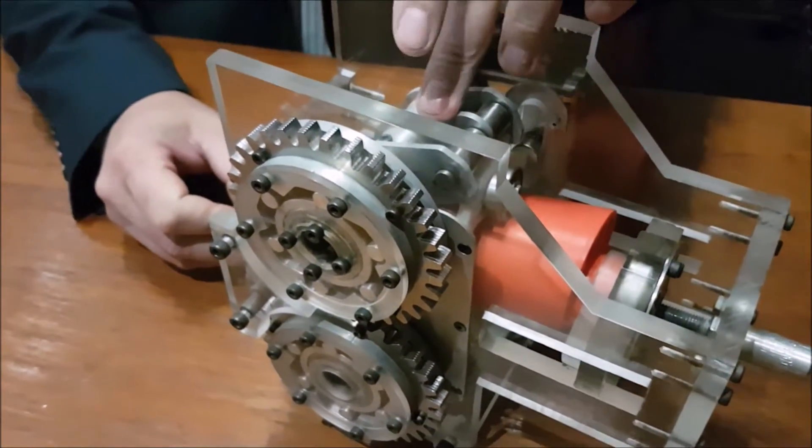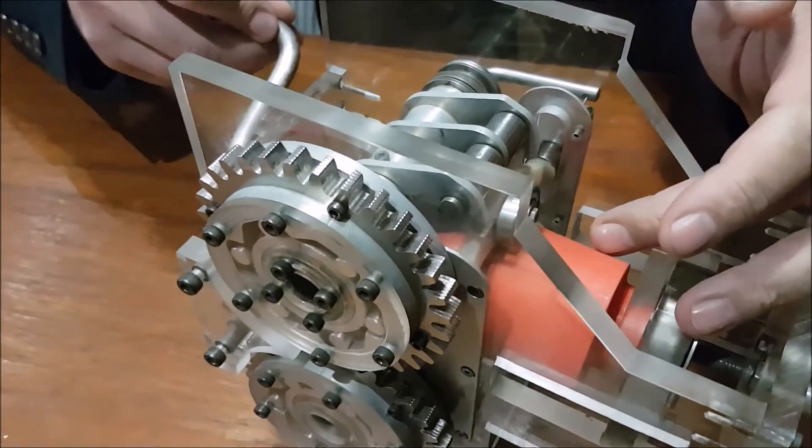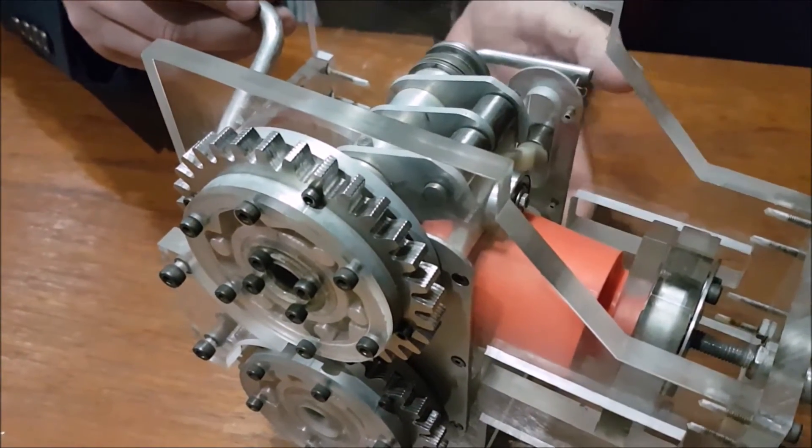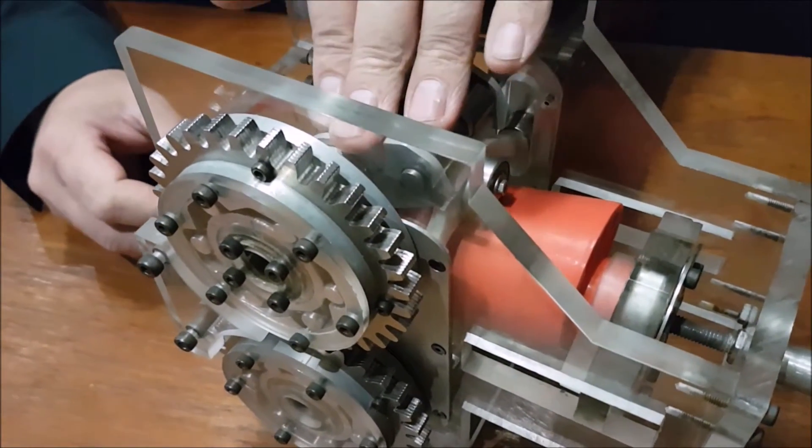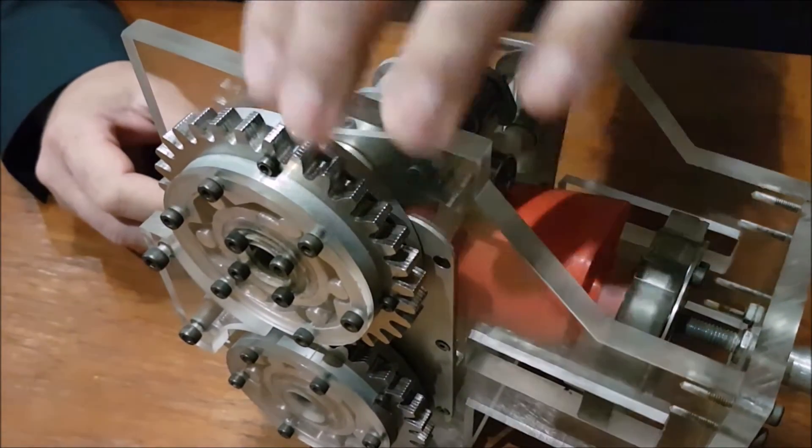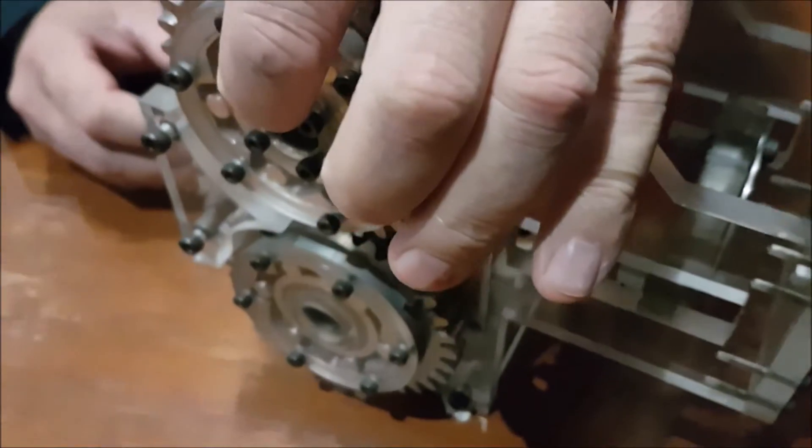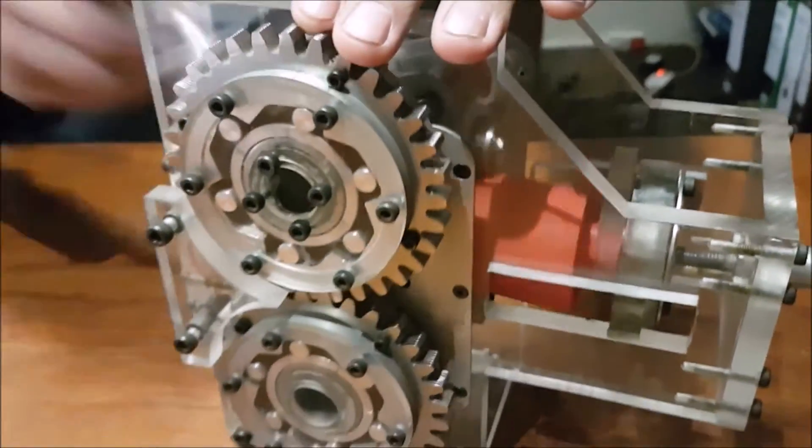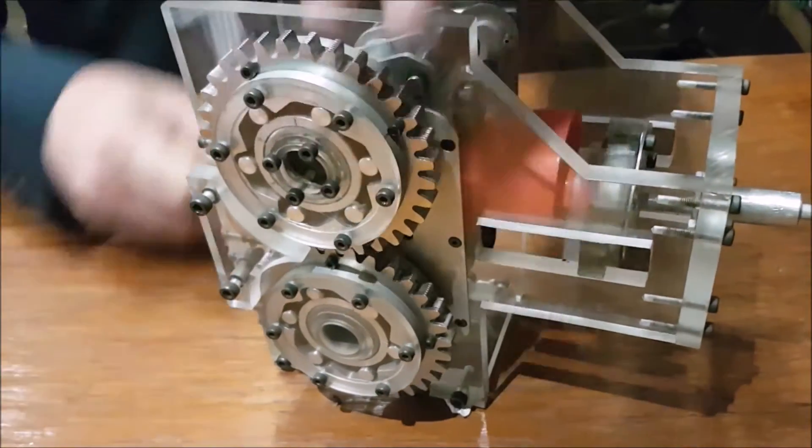The followers act on a rocker arm, so as the rotor rotates, the rocker arms oscillate—one here and one at the bottom. And then the rocker arms are coupled to the output gears via a one-way clutch or a sprag. So these output gears take turns in driving the output.